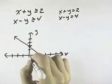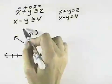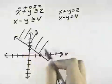Then I want to do a test point. If I test the origin, I'd have 0 plus 0 is greater than or equal to 2. So that's not true, so that says shade away from the origin.